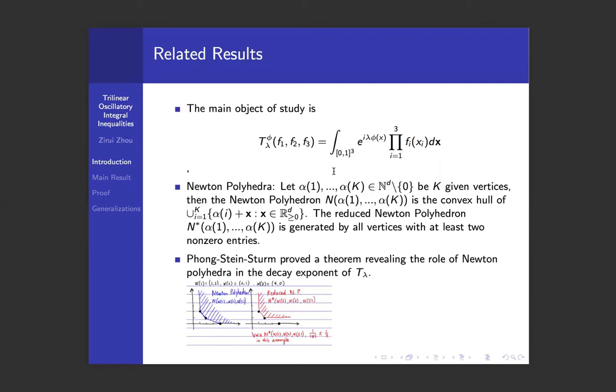We can also define a multilinear version of this form by replacing the threefold product by an n-fold product of f_i(x_i), and do the integration on the unit cube in R^n.